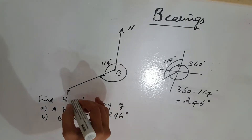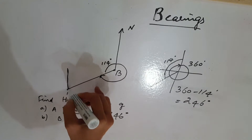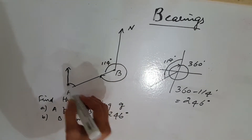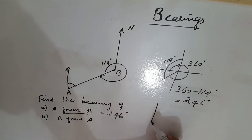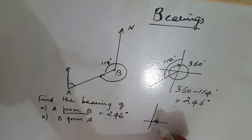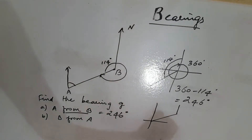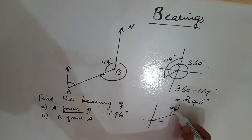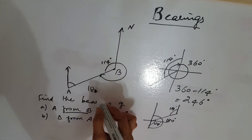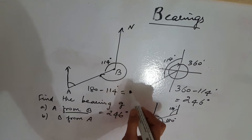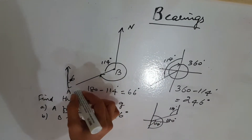This is B from A, so you can draw a straight line here. B from A is from this side. This is 114 degrees, so this also 114 degrees. This full is 180 degrees, so 180 minus 114 degrees is equal to 66 degrees. So this value is 66 degrees.